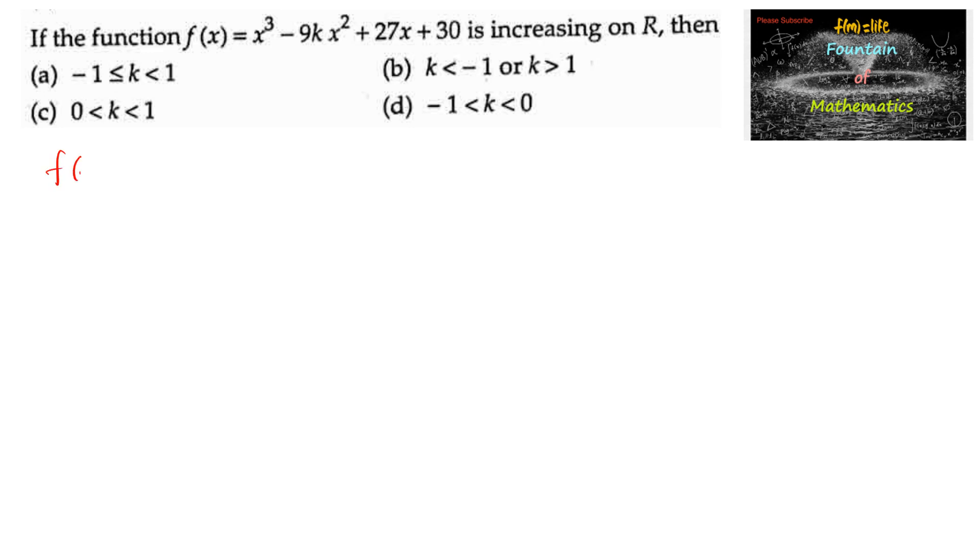If the function f(x) = x³ - 9kx² + 27x + 30 is increasing on R, then find the range of k. Increasing means we can write f'(x) ≥ 0.